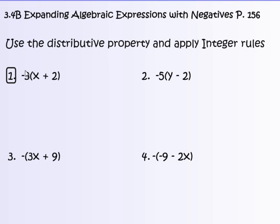We're going to continue working in section 3.4 today with expanding algebraic expressions. This time we're going to be distributing with a negative number. I'm on page 156 in the book, and we're going to use the distributive property and apply all of our integer rules. Number 1 is done in the book, but I'm going to go through that one as well. I'm going to do several examples with you — please copy down numbers 1, 2, 3, and 4.